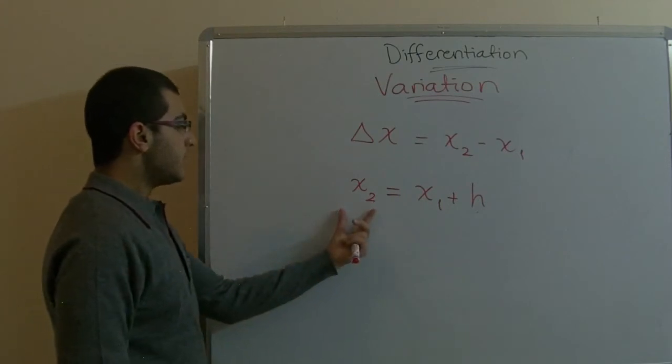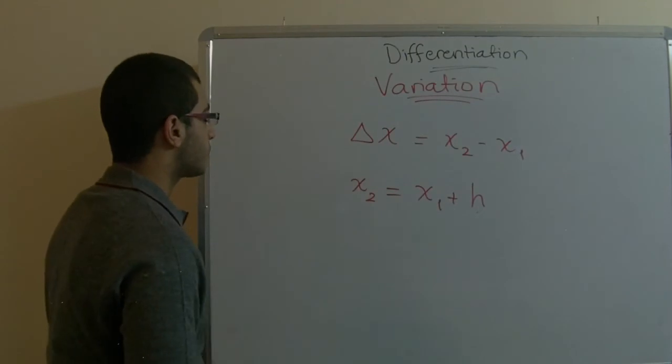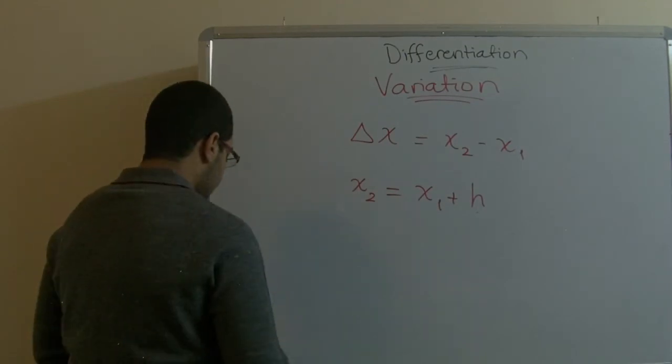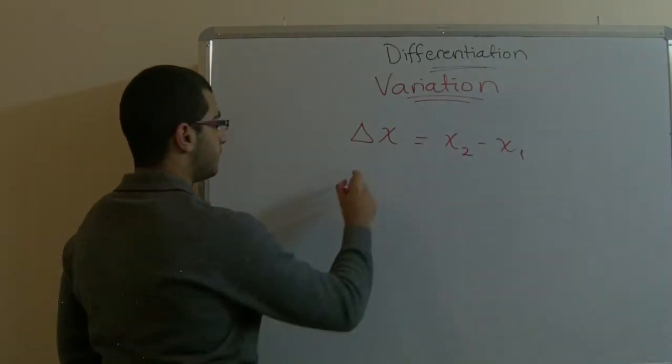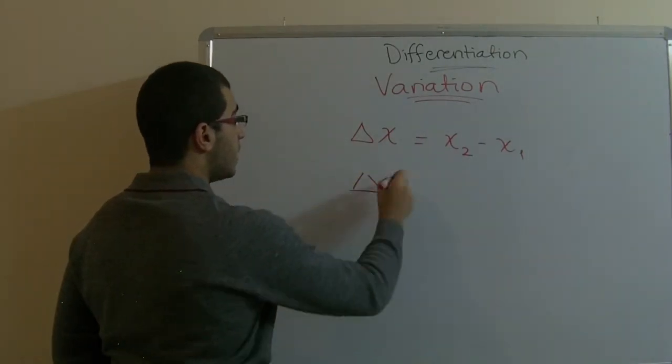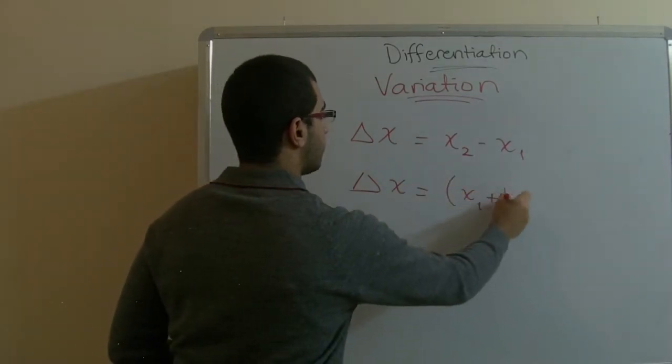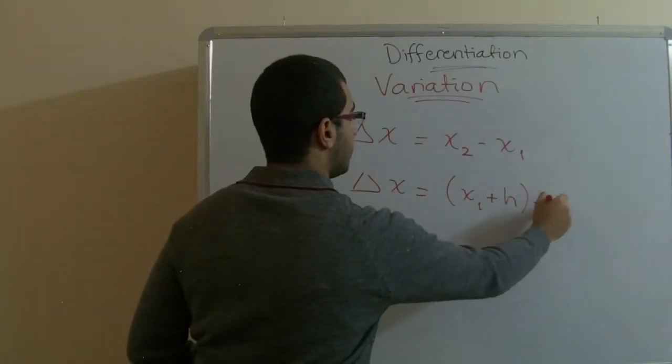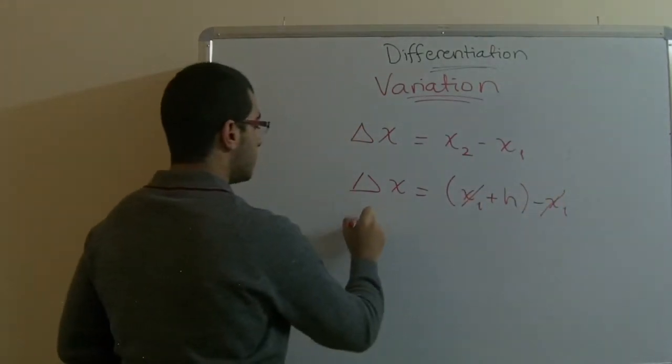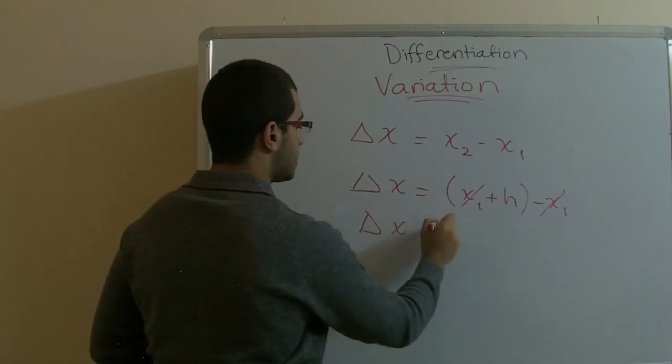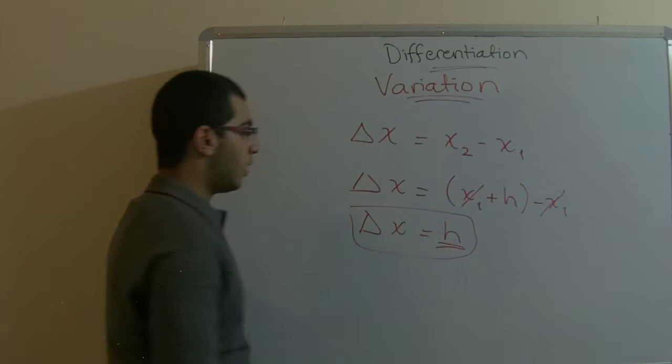So this is x2, and it equals x1 plus h. We can rephrase the previous equation like this: x1 plus h negative x1. And so the x1 goes with the negative x1. So the delta x equals h. This is the value of the variation.